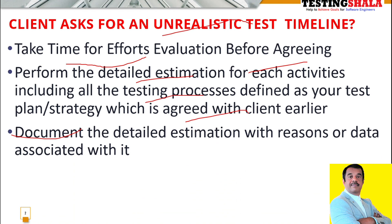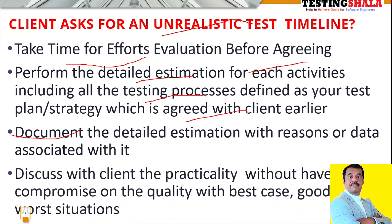Once we are able to document detailed estimation with the reasons and data associated with it, we should go back to the client and explain our viewpoint — what things we can do within the given available timeline, what the best cases we can execute, what the good cases we can execute, and what the worst situation we can handle considering various risks. By providing this detailed explanation, even an aggressive client with unrealistic demands can agree if you have the right set of evaluation, estimation, and data. You can easily convince any difficult client.